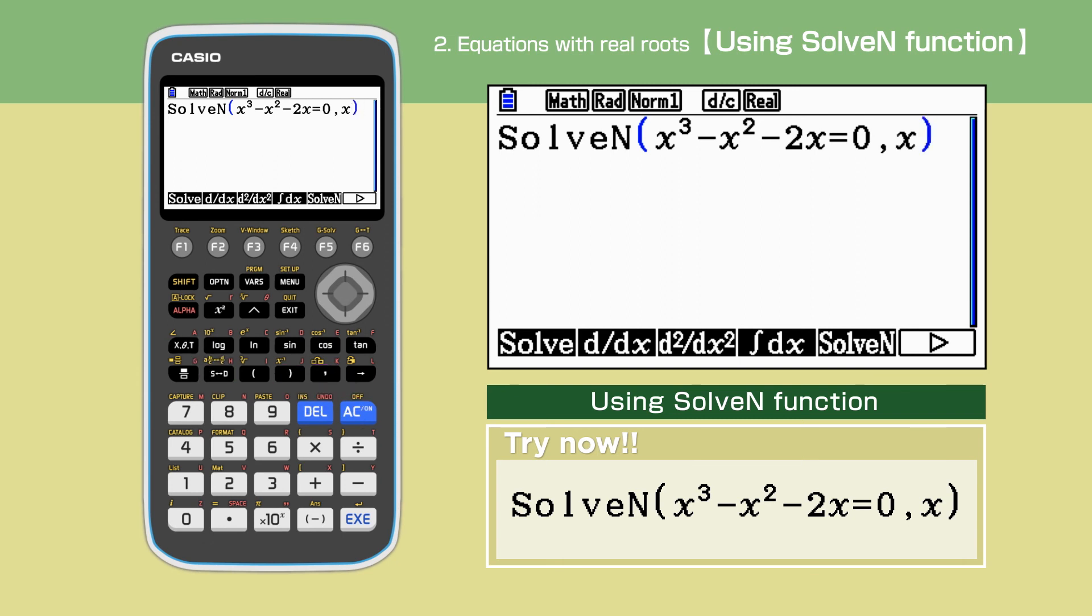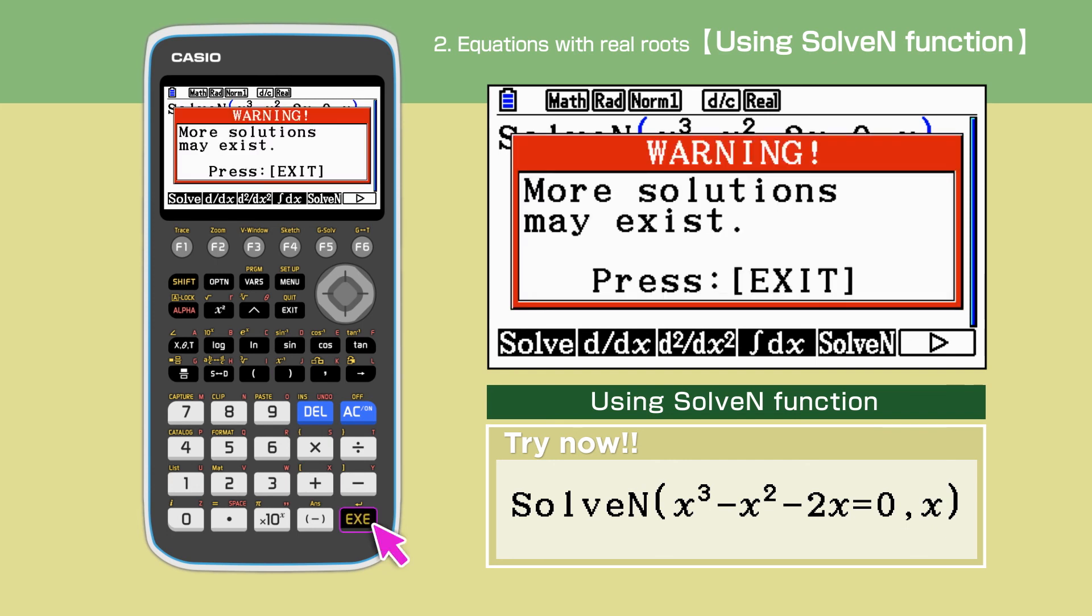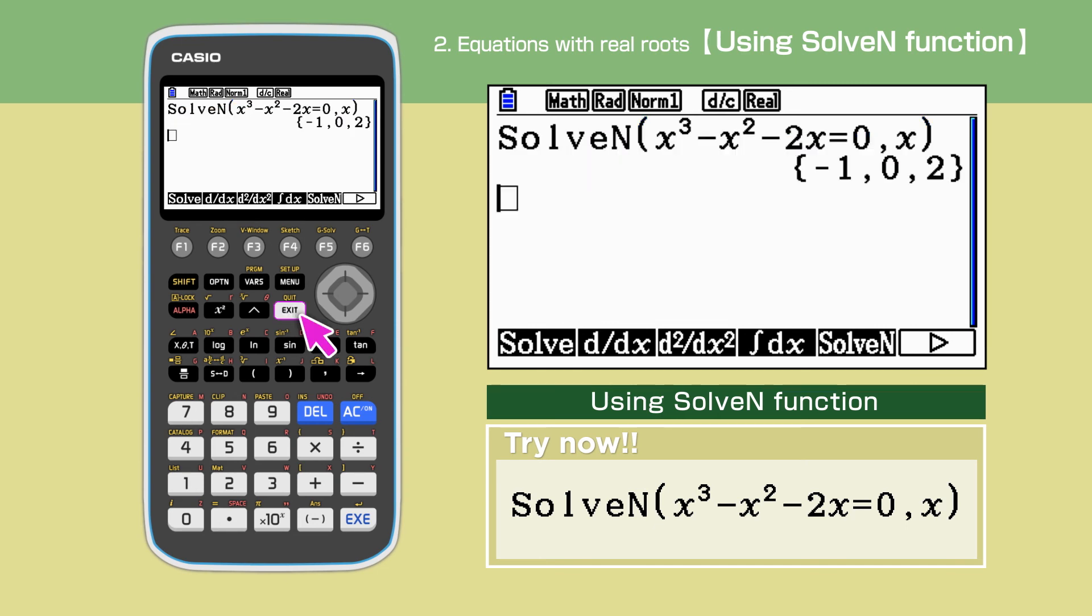Once everything has entered, press execute. We will get a warning saying there are several solutions to this equation. We press exit to continue. The solutions are displayed and they are minus 1, 0, and 2. These are the same as our solutions we found earlier part of this video.